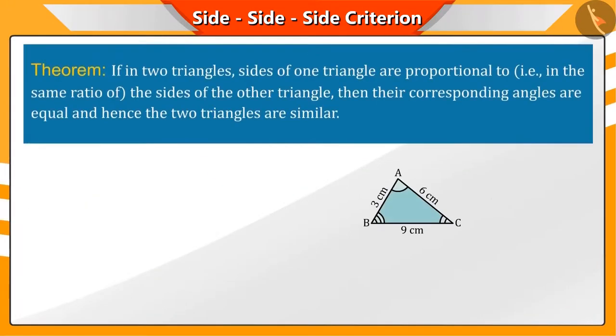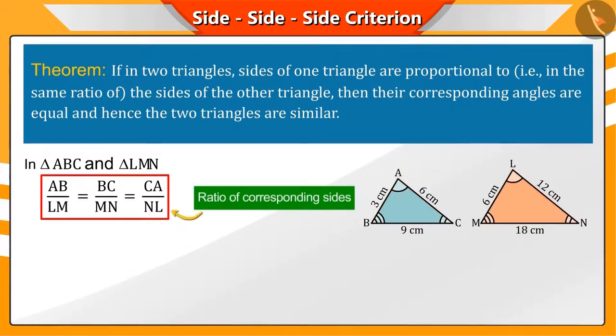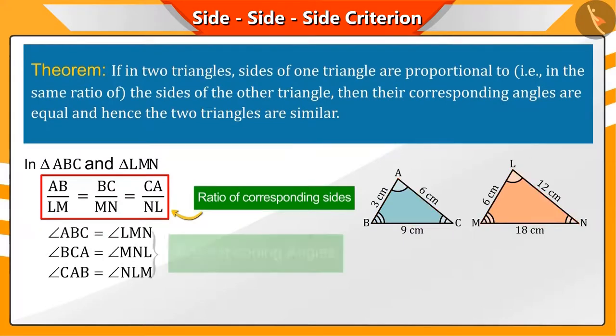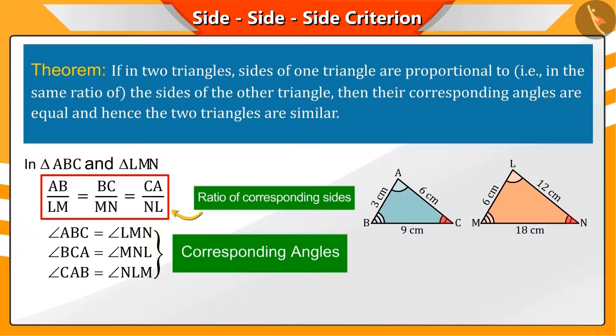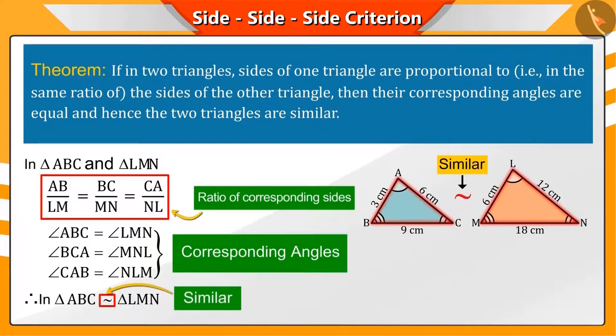Hence, we can say that in any two triangles, if the corresponding sides are in the same ratios, then their corresponding angles will always be equal, by which we can say that they are similar triangles.